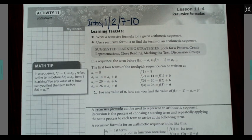The first four terms of the toothpick sequence can be written as a1 equals 8, a2 equals a1 plus 6, a3 equals a2 plus 6, a sub 4 equals a3 plus 6. Or 14, 20, and 26.